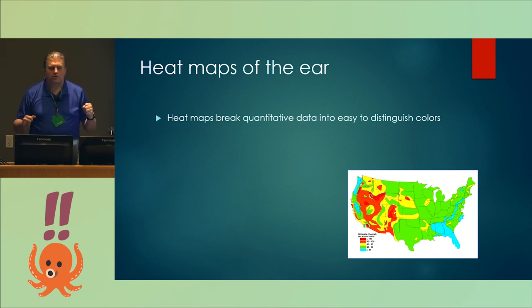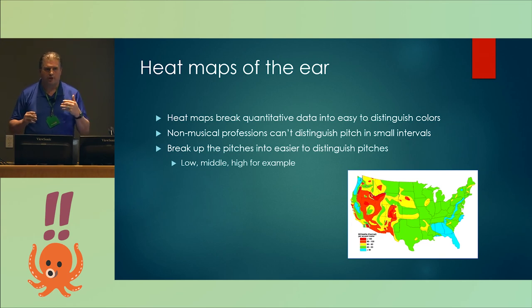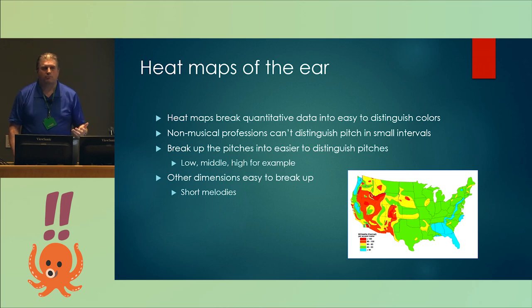What I'm trying to do is find heat maps of the ear. Heat maps break down quantitative data into easy distinguished colors, so it's not so much tone in the way that it's a C versus a B, but it's more like - because people can't hear these small intervals - break these up into easier distinguished pitches, for example low, medium, high.